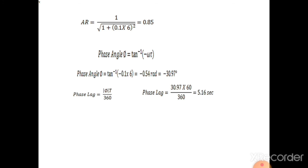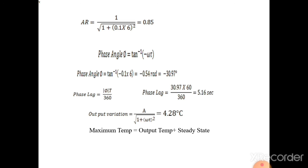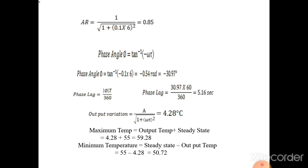We have calculated the phase lag and amplitude ratio. Now for the first part — what is the minimum and maximum temperature? The output amplitude variation is calculated as 4.28 degrees centigrade (AR × input amplitude = 0.85 × 5). Therefore, maximum temperature equals steady state plus output = 55 + 4.28 = 59.28 degrees centigrade. Minimum temperature equals steady state minus output = 55 − 4.28 = 50.72 degrees centigrade. We have calculated the amplitude ratio, phase lag, minimum, and maximum temperature read by the thermometer for a first order system with sinusoidal response.